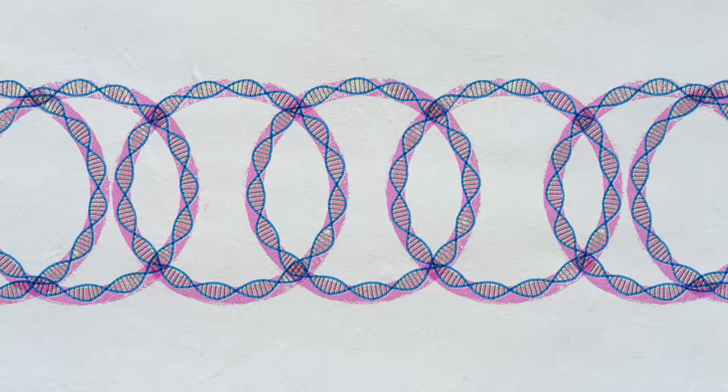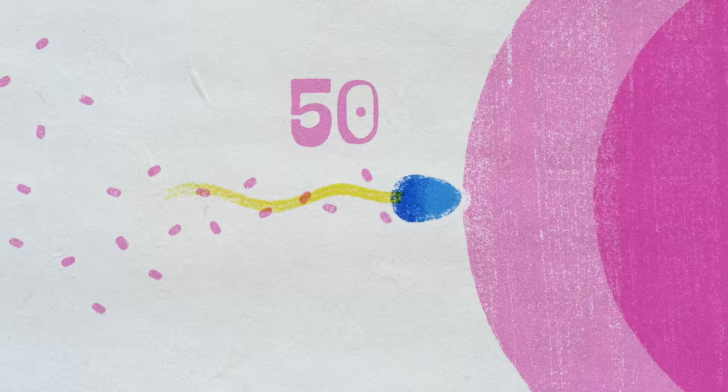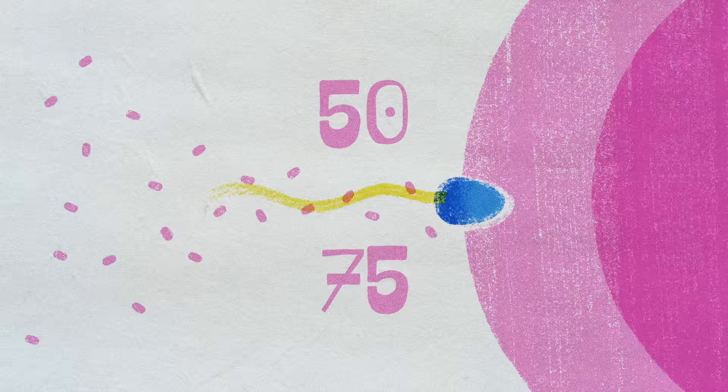In humans and most animals, that parent is the mother. Sperm contain approximately 50 to 75 mitochondria in the tail to help them swim. These dissolve with the tail after conception.